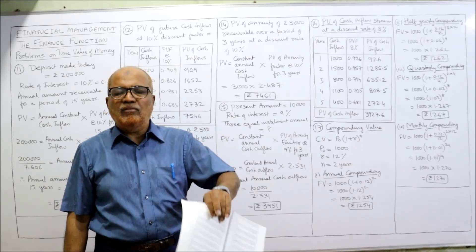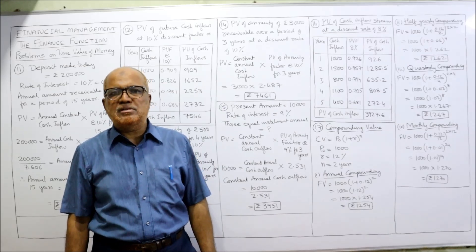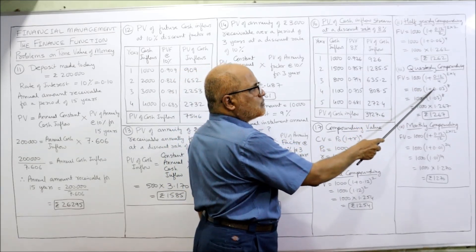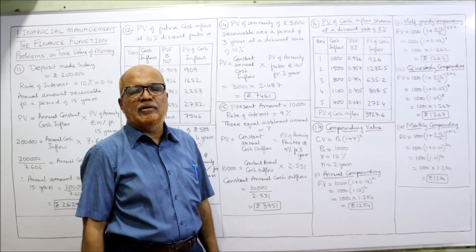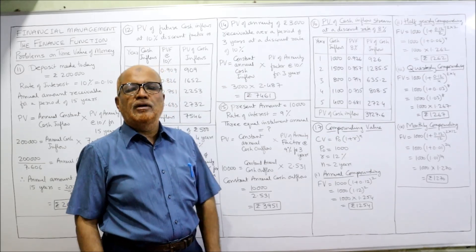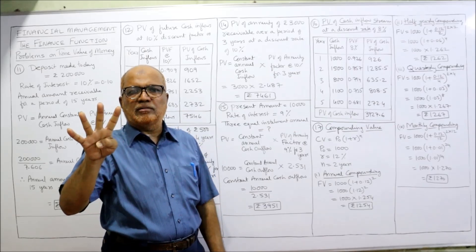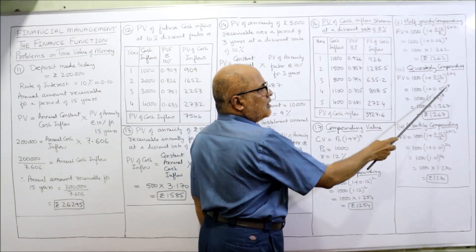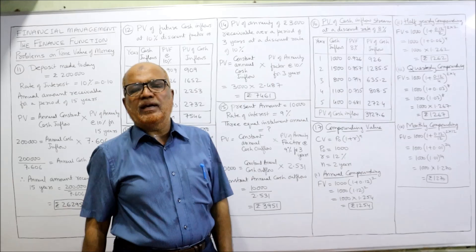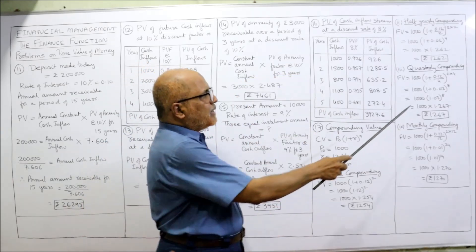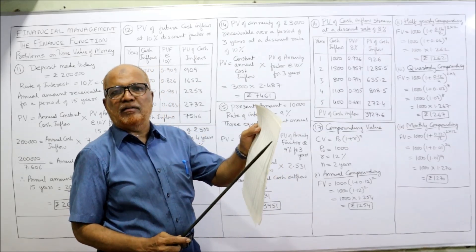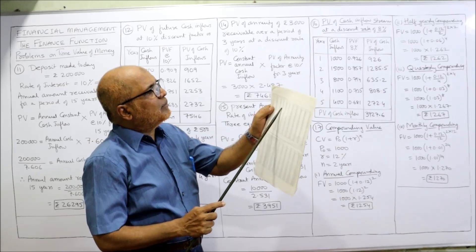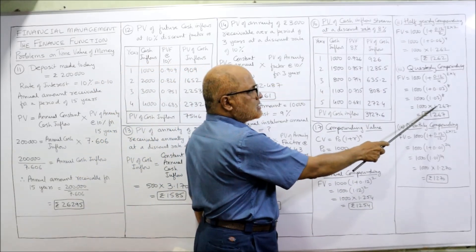For quarterly compounding, there are 4 quarters in a year. The quarterly rate is 12% ÷ 4 = 3% (0.03). Over 2 years there are 8 quarters (2 × 4 = 8). From the compound value table at 3% for 8 periods, the factor is 1.267. So the compound value with quarterly compounding is 1,267.